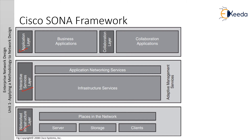The networking infrastructure layer is associated with infrastructure such as servers, storage, and clients across different places in the network. The integrated service layer is associated with application networking services, infrastructure services, and adaptive management services. The application layer is divided into business applications and collaboration applications.